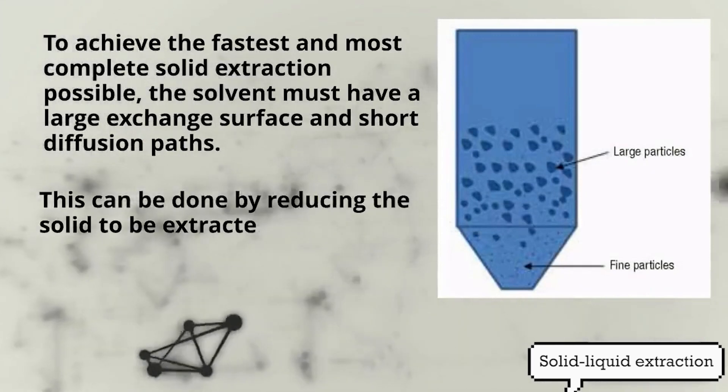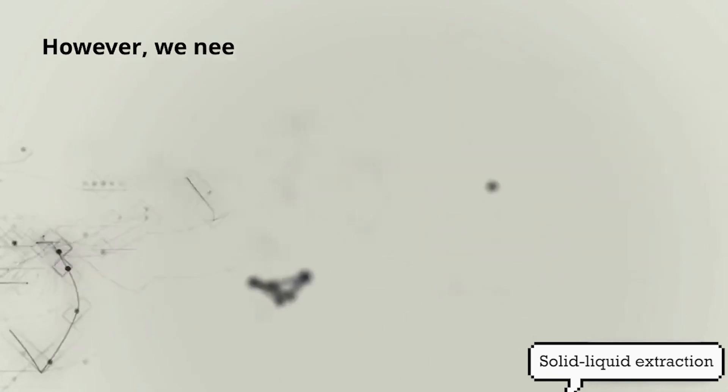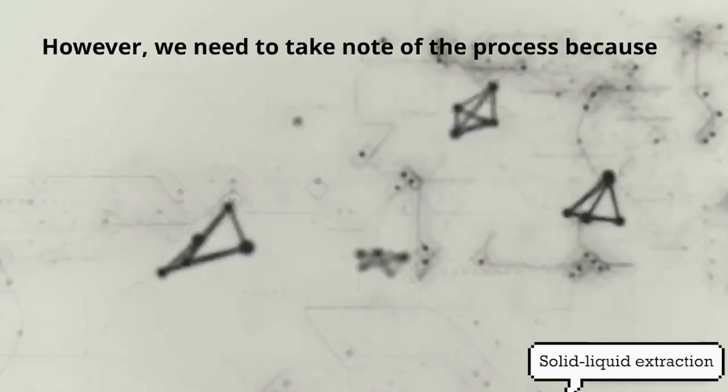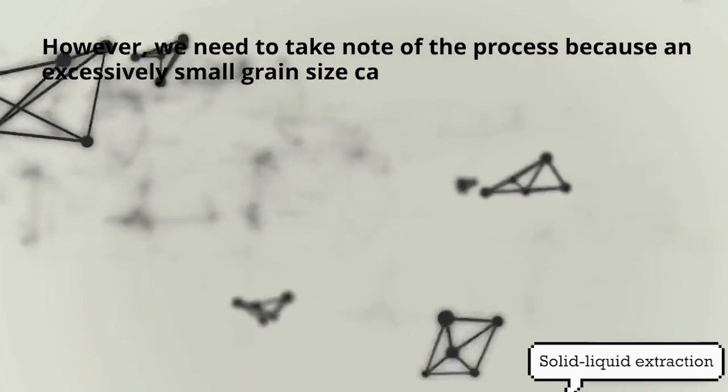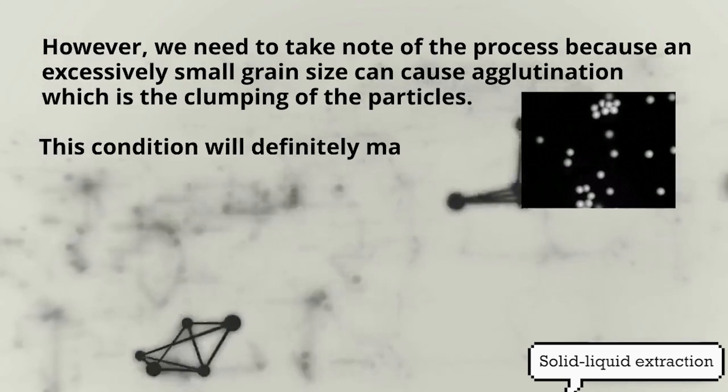This can be done by reducing the solid to be extracted into very fine particles. However, we need to take note of the process because an excessively small grain size can cause agglutination which is the clumping of the particles.